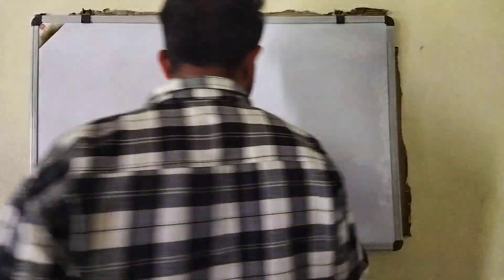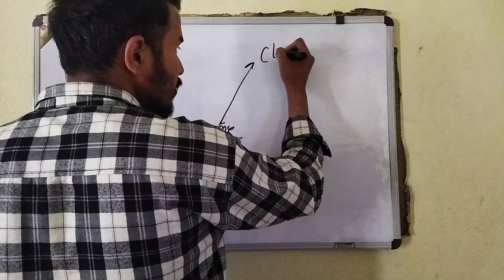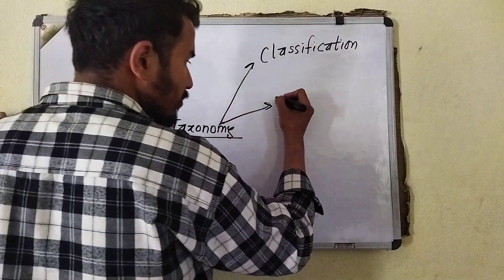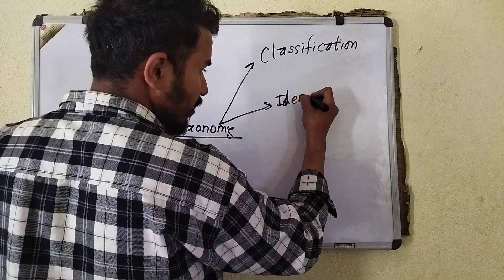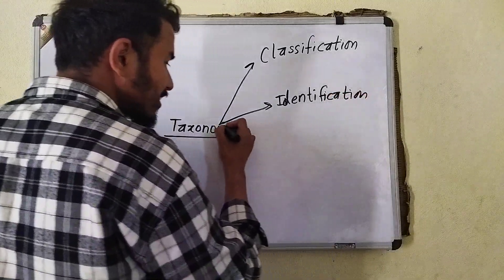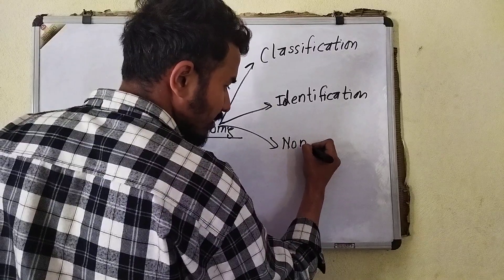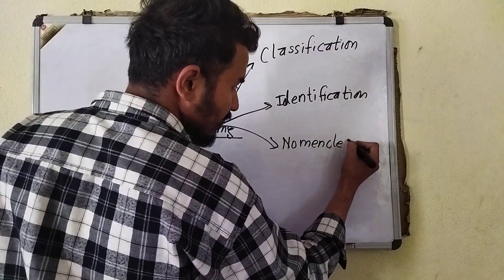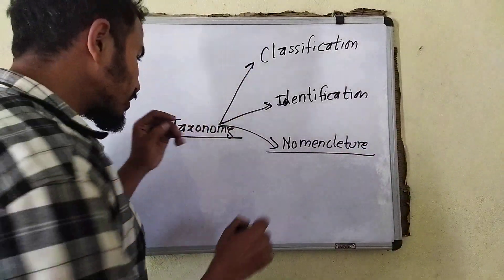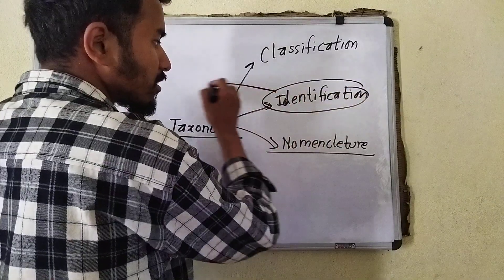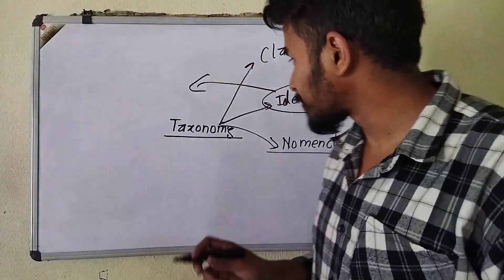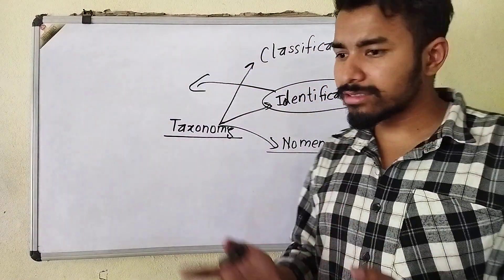Taxonomy has main principles. First, classification. After that, identification. We should begin from identification because that is the major thing, then classification. Taxonomy is the branch of science.